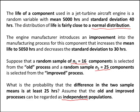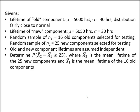We assume the old and improved processes can be regarded as independent populations, meaning the lifetime of an old component does not affect the probability of the new component having a shorter or longer lifetime — the lifetimes are independent of each other. I took away all the story and just gave us the bare bones of the problem. The lifetime of the old component, which I'll call X1, has a mean of 5,000 hours and a standard deviation of 40 hours, and the original distribution of its lifetime is close to normal.